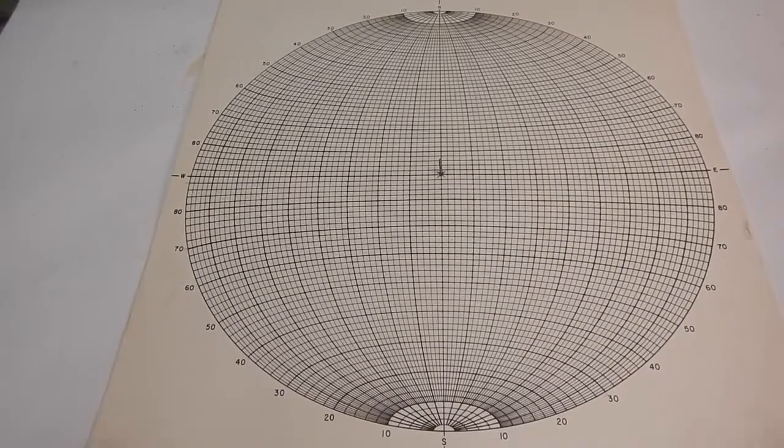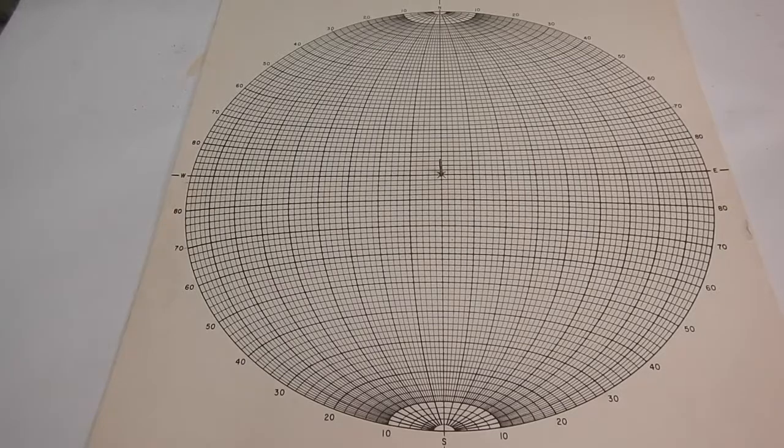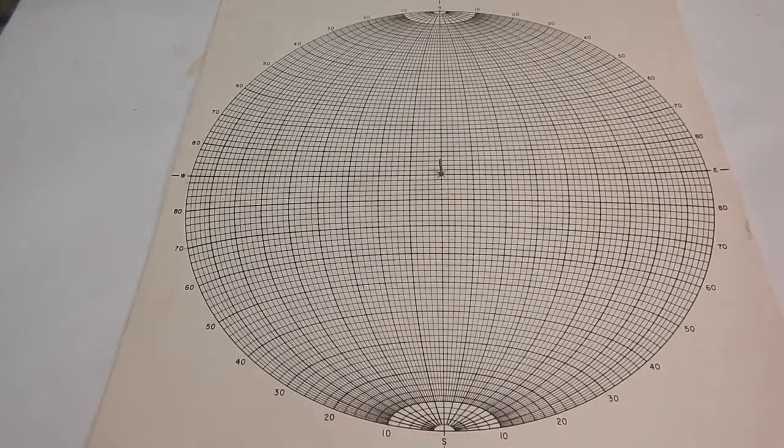Alright guys, so we talked about planes and lines, what they look like in 3D, what we saw in the field. Now we're going to move on to the stereo net, and how we actually construct a stereo net, and orient planes and lines in a stereo net.